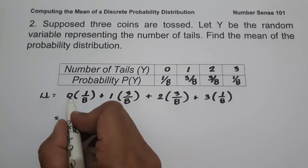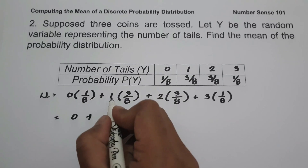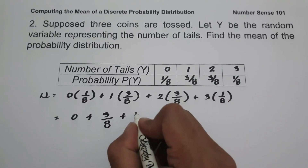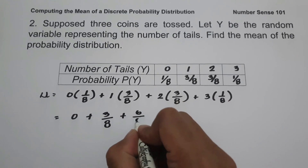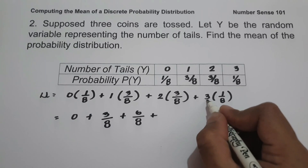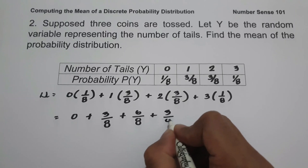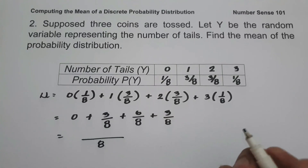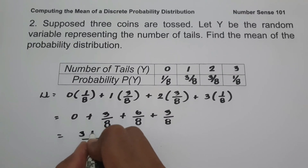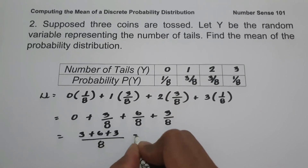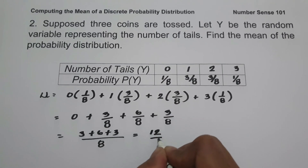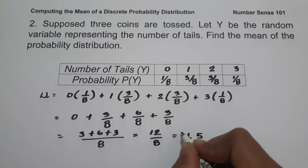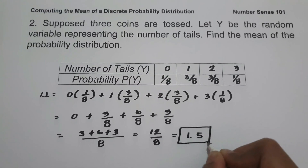Computing: 0 × 1 = 0, plus 1 × 3 = 3/8, plus 2 × 3 = 6/8, plus 3 × 1 = 3/8. Since we have the same denominator, we get (3 + 6 + 3) over 8, which is 12 over 8. 12 divided by 8 is 1.5. This is the mean of the probability distribution, and this will be our answer.